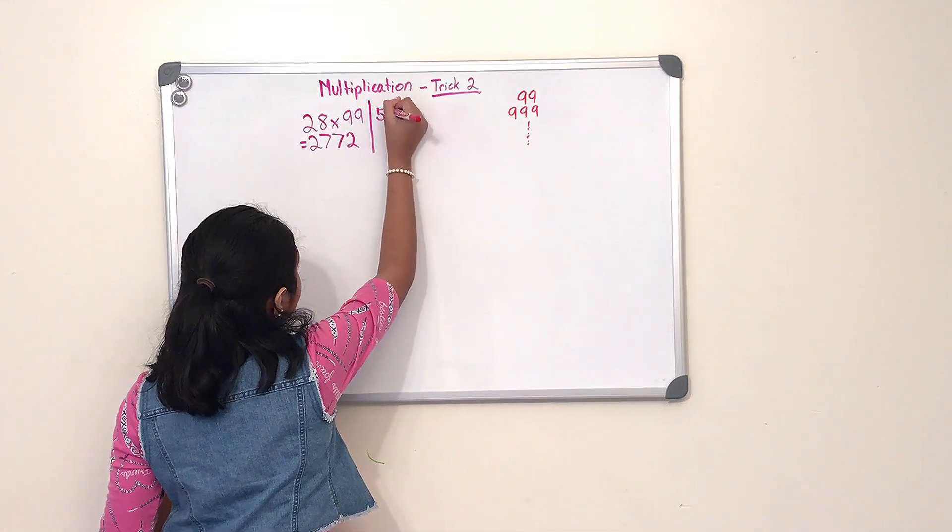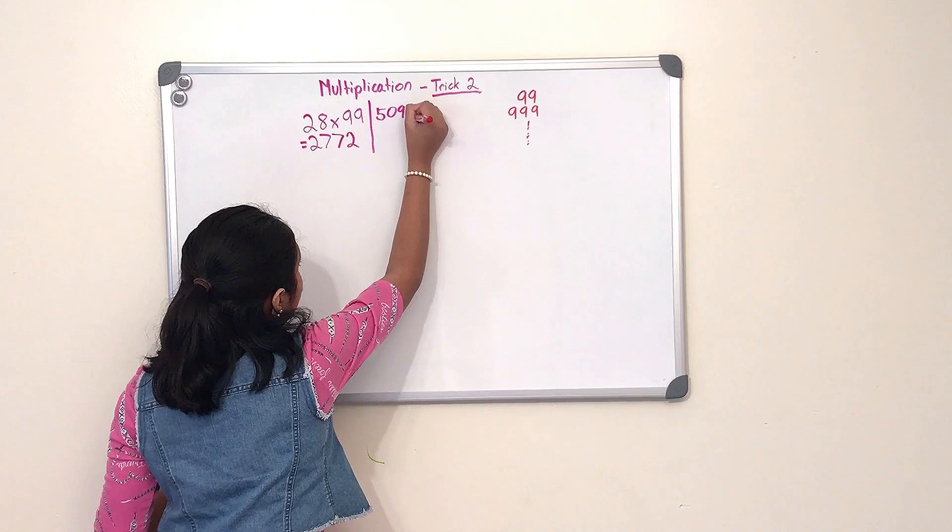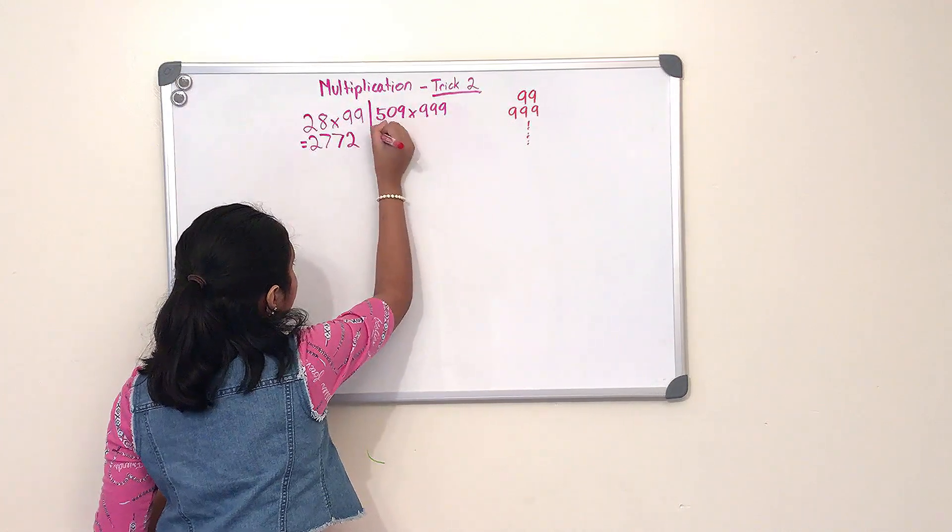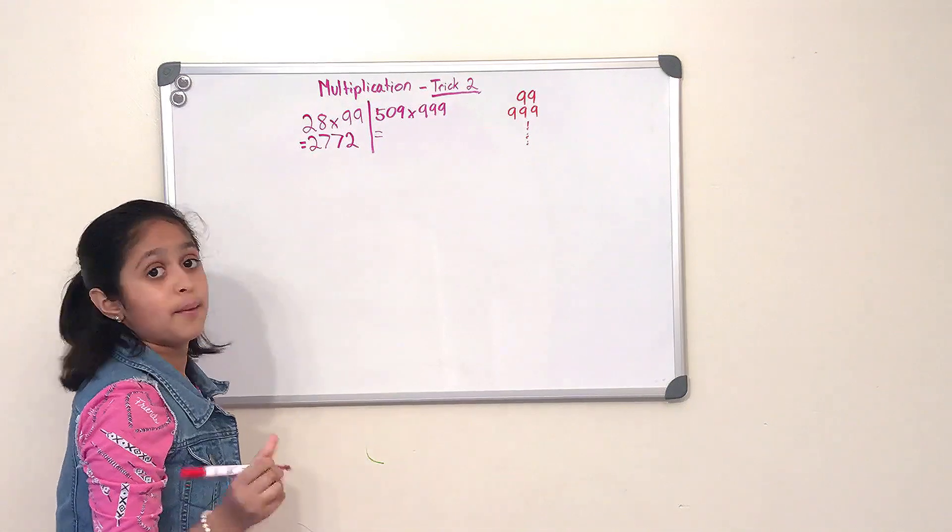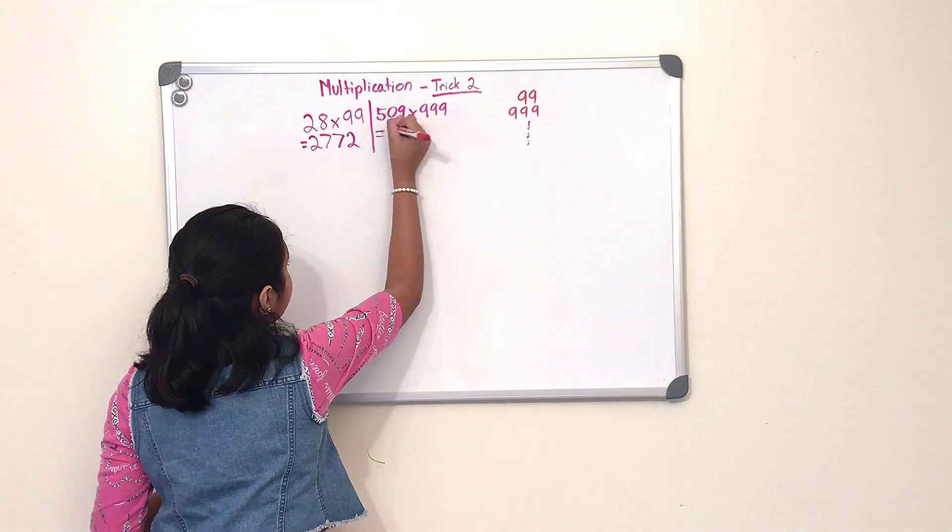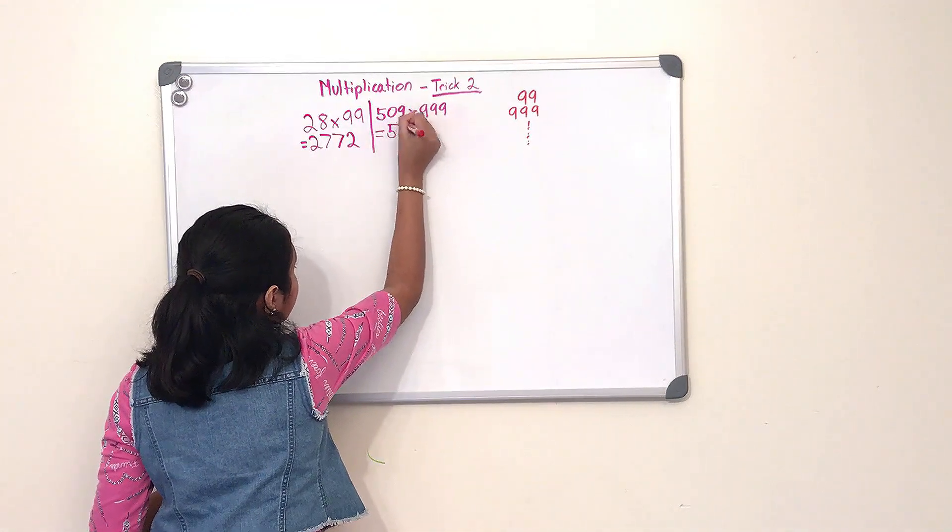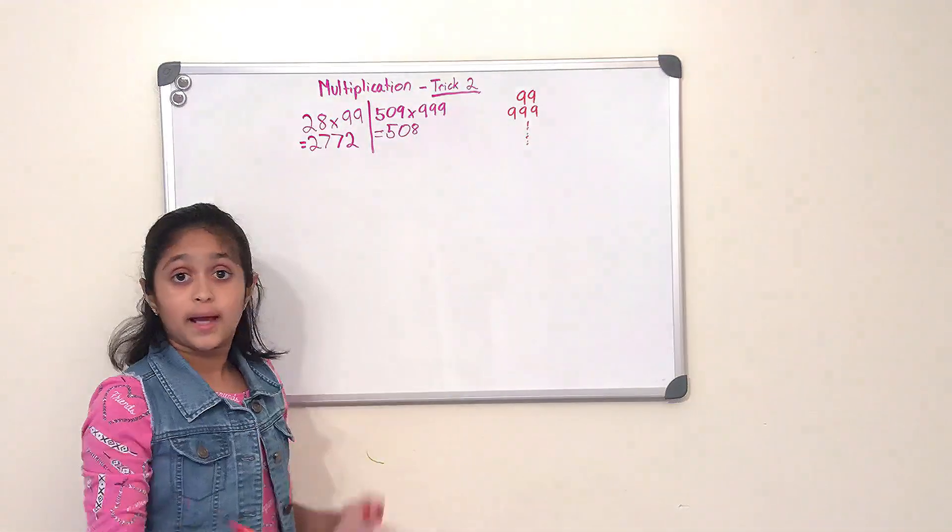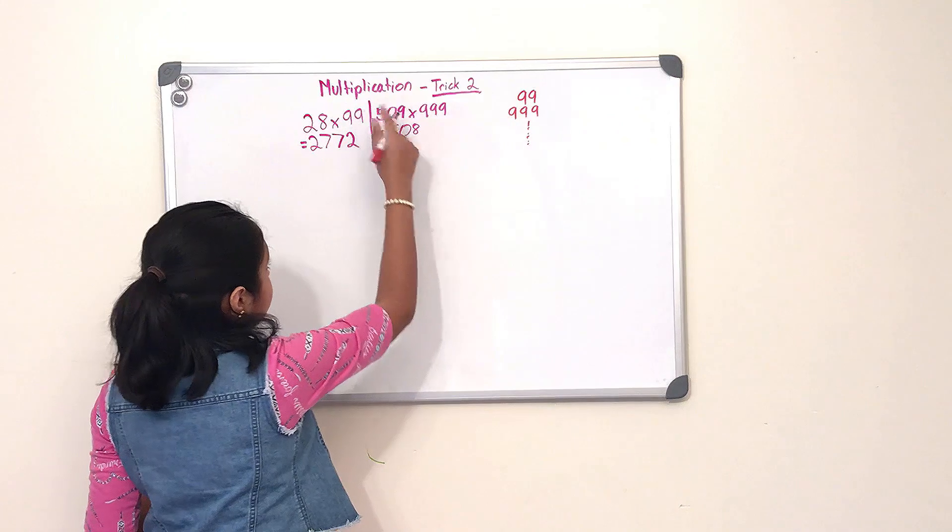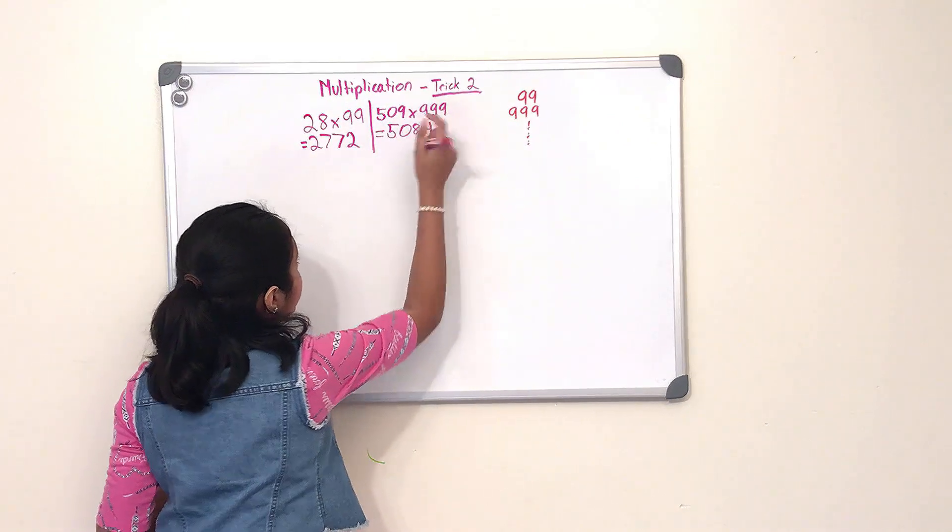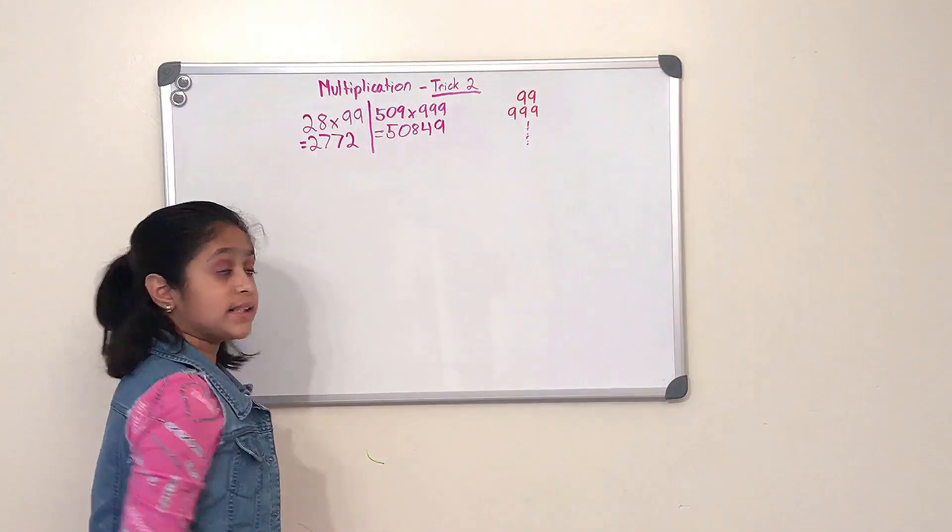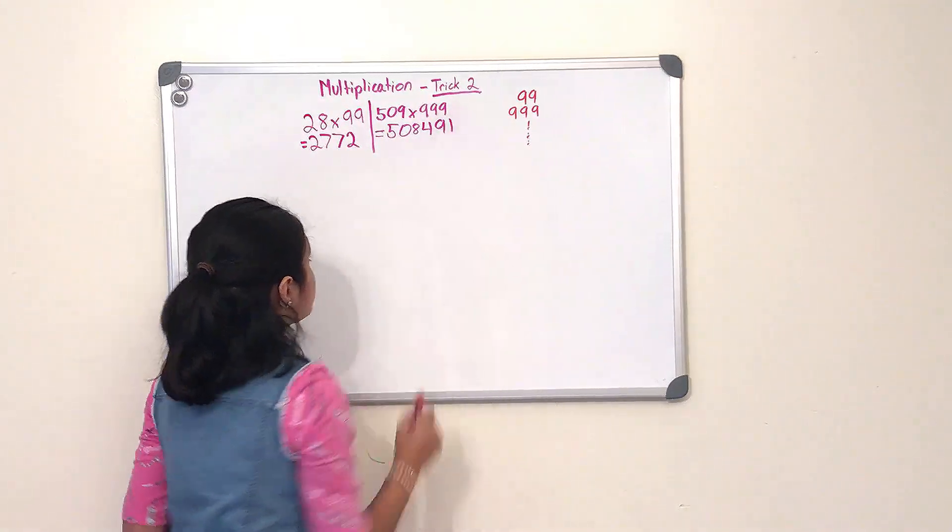So first we have to do 509 minus 1, and that would be 508. And then we would have to apply the rule, and that would be 9 minus 5, and that would be 4, 9 minus 0, 9 would be 9, and 10 minus 9, and that would be 1. So this is our product: 508,491.